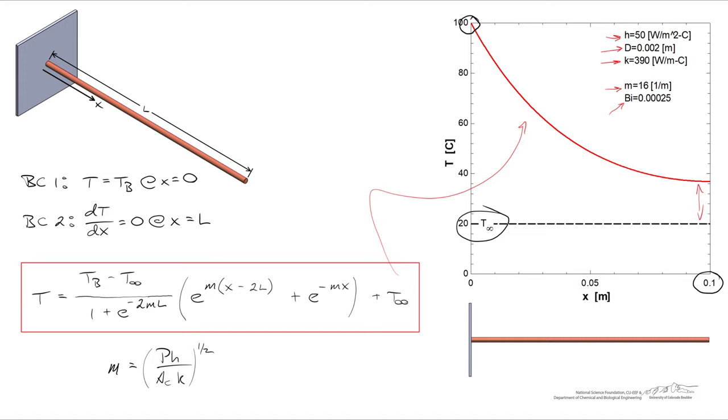So this fin hasn't yet cooled down to ambient temperature, but if you examine the form of this, if we made the length quite a bit longer, you could expect that the temperature of the fin will eventually asymptotically decay to T infinity, or the ambient temperature.